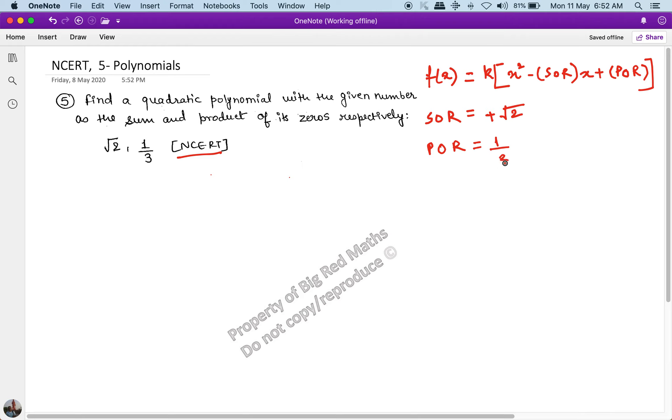So the final answer to the question will be f(x) = k times (x² - root 2 times x + 1/3).